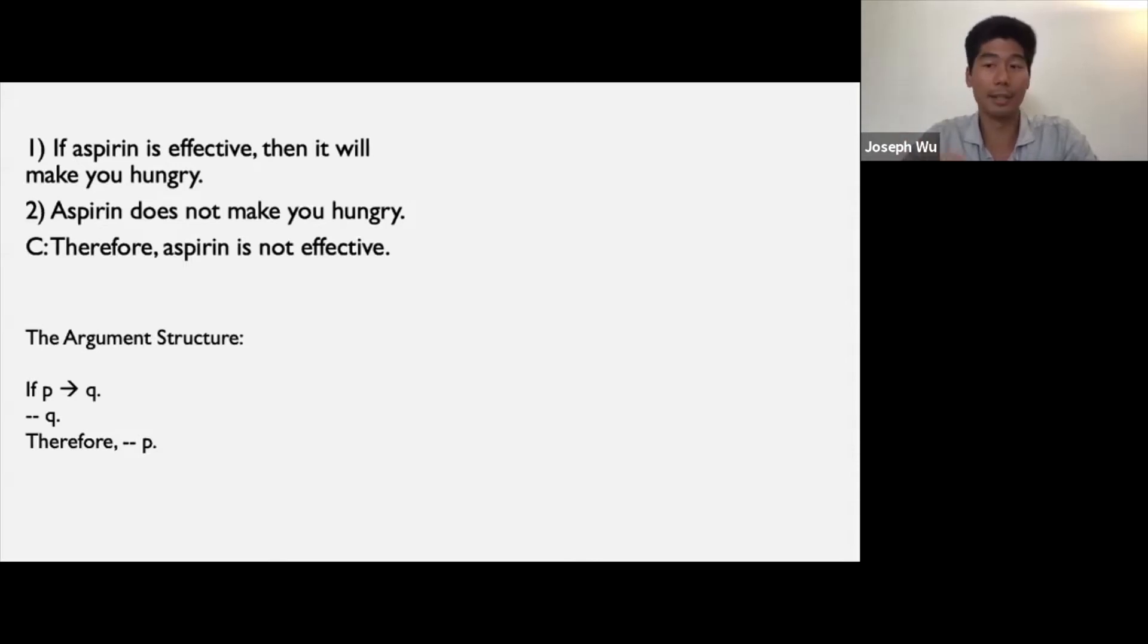As explained in the tutorial on deduction, arguments that follow this form are called falsification via modus tollens. The structure of this argument is valid. That is, if the premises are true, then the conclusion must be true.